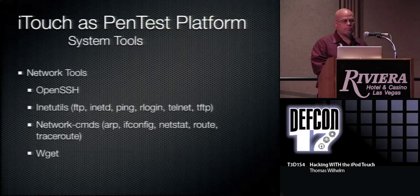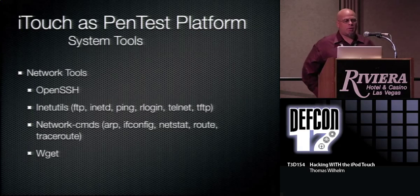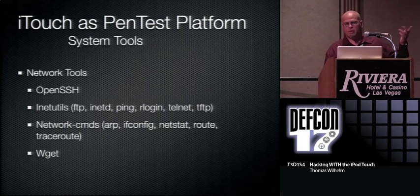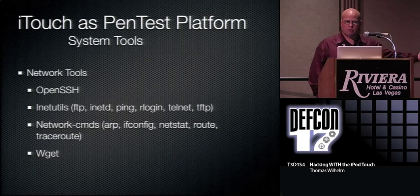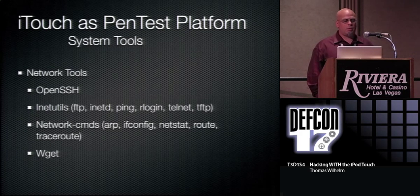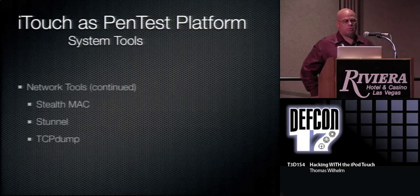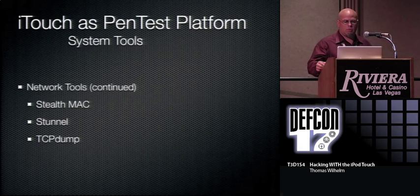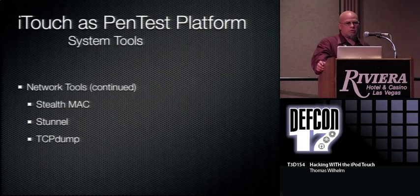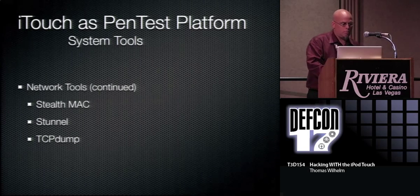There are also solid network tools that make it even better. OpenSSH is already covered. There are iNet utilities including FTP, R-login connectivity, Trivial FTP, and Telnet. Network commands include ARP, Netstat, Traceroute, and Wget. You can also change your MAC address, install STunnel for secure tunnels, and TCPdump — which becomes a big boon later on.